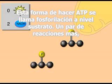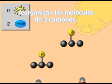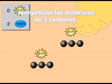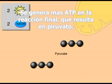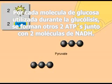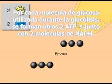A couple more reactions rearrange the atoms in the three-carbon molecules. More ATP is generated in the final reaction that yields pyruvate. For each glucose molecule broken down during glycolysis, a net of two ATPs are formed, along with two NADH molecules.